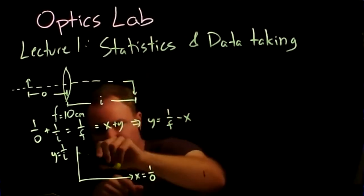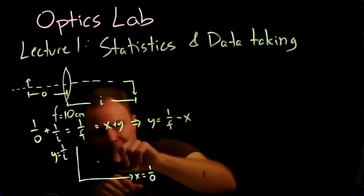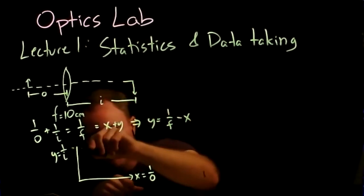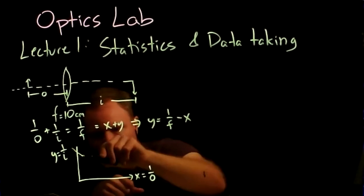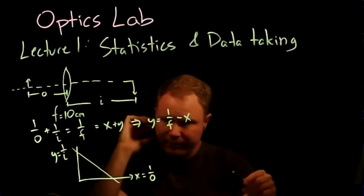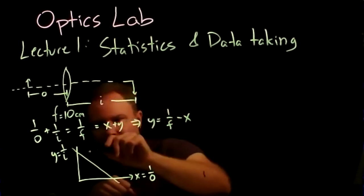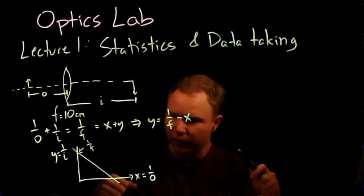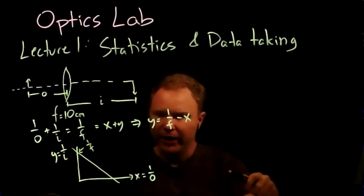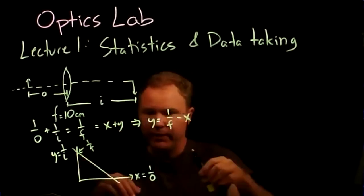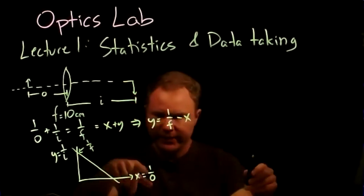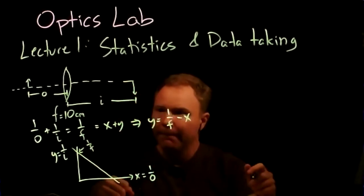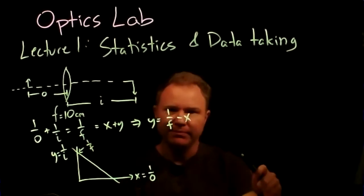So it's a line with a slope of −1 and an intercept of 1/F. This is our theoretical model. The intercept is 1/F. What you'll actually do is choose a bunch of different object distances, which will turn into 1/O values, make measurements, and fit a line.